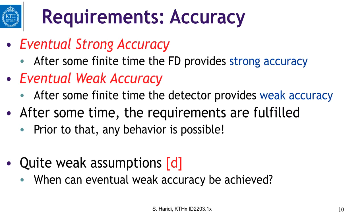One can define even weaker variants of accuracy. Eventual strong accuracy says that after some finite time, the failure detector provides strong accuracy. Eventual weak accuracy says that after some time, the detector provides weak accuracy. Prior to this point, any behavior is possible, making these weaker properties. If we think about things eventually working well, we think about partially synchronous systems, where after some time the system behaves predictably.